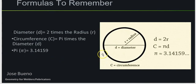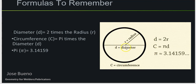Here are just some quick formulas to remember. If you're looking for the diameter and you only know the radius, all you have to do is multiply the radius by 2. If you're looking for the circumference and all you have is the diameter, you multiply the diameter by pi, which is 3.14159. These are two very important formulas to remember because you will be using these at some point during your welding or fabrication career.